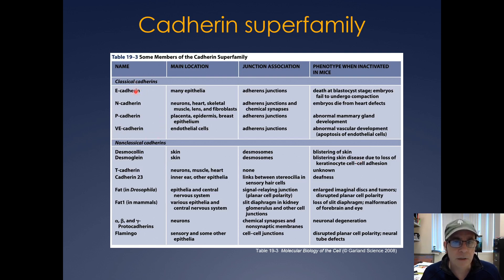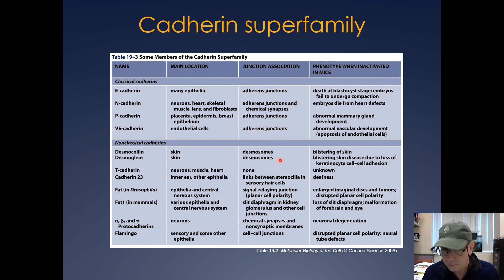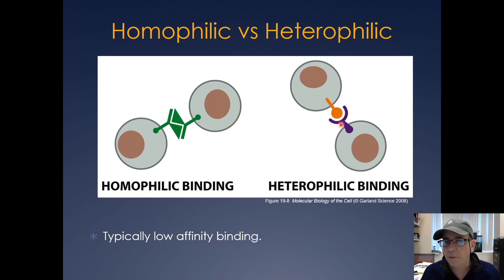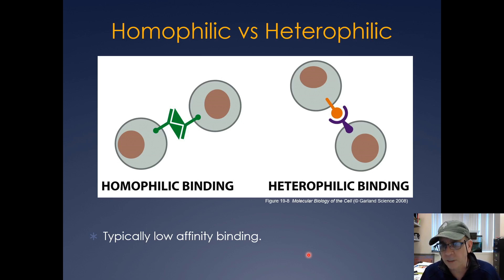Here are some of the classical cadherins and the non-classical ones. Desmocollin and desmoglein are actually in desmosomes, whereas the strict cadherins are in the adherens junctions. The adherens will be actin-linked and desmosomes will be intermediate-filament-linked. You can have two types of connections between two cells: homophilic binding, where two like cadherins attach, or heterophilic binding, where two separate connecting proteins join. These are all typically low-affinity bindings, so a cell will have many of them to create stronger connections.